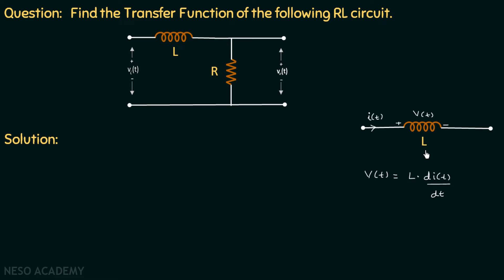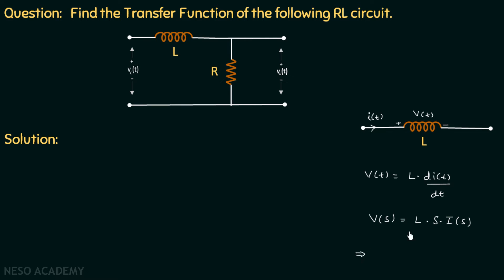Now if we apply the Laplace transform to this equation, we get V(s) on the left side. L is the inductance so we take it out, and we find the Laplace transform of dI(t)/dt. By the time derivative property, the Laplace transform of dI(t)/dt is S·I(s). So V(s) = L·S·I(s). Taking the ratio V(s)/I(s) gives us the impedance of the inductor, which equals SL. Therefore, the impedance of this inductor in the Laplace domain is SL.